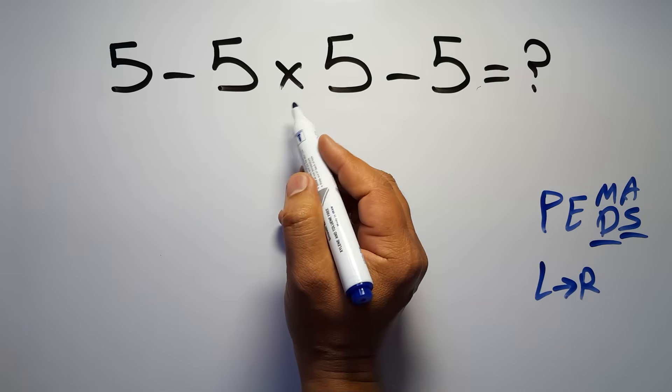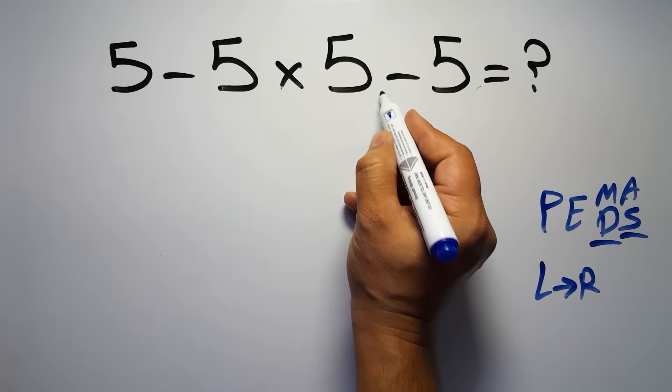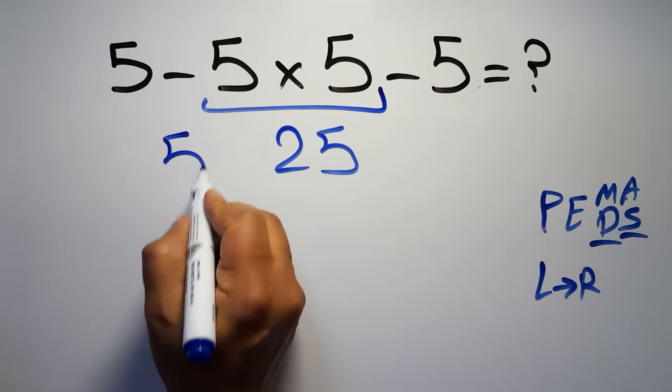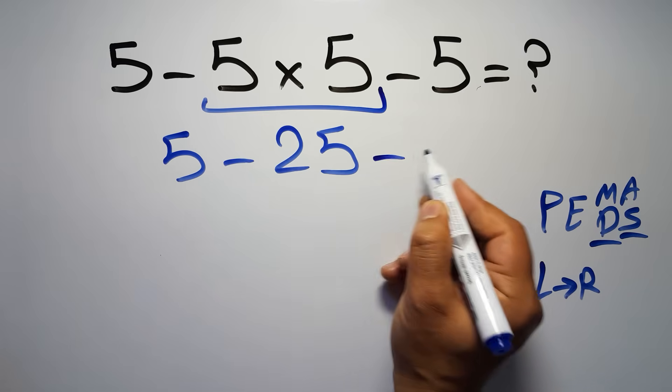So first this multiplication, 5 times 5 gives us 25, so 5 minus 25 and minus 5.